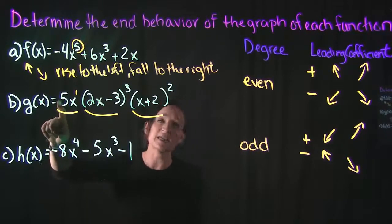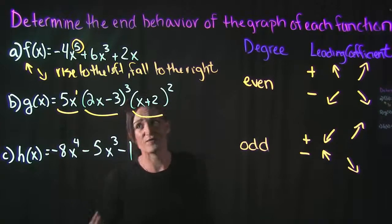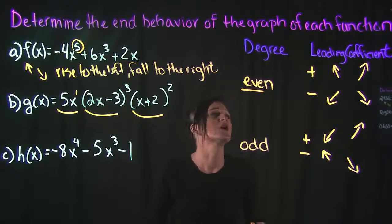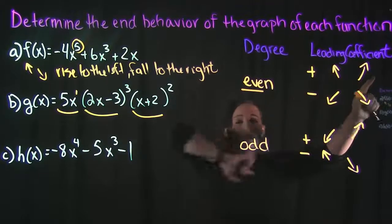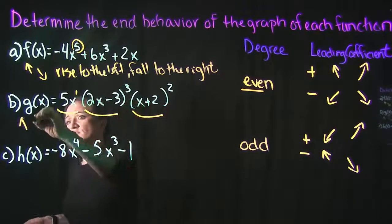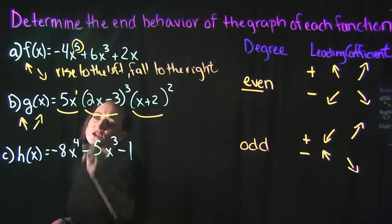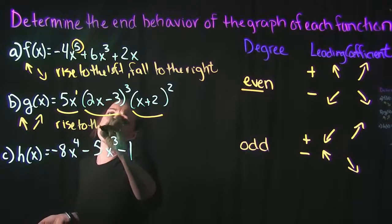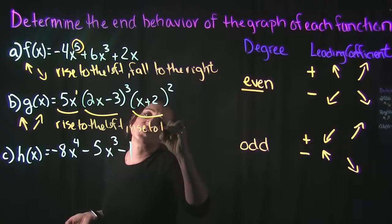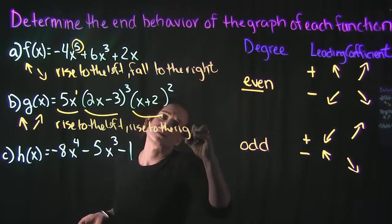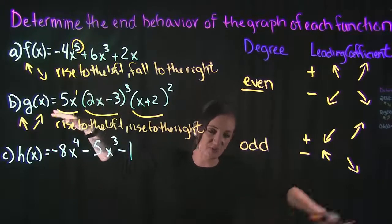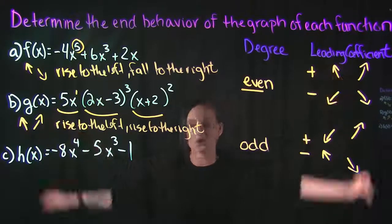Looking at the leading coefficient, it is positive. Since the degree is six, that means it's even and positive. So it's going to be rising to the left and rising to the right. We can say: rise to the left, rise to the right. Or, as x goes to negative infinity, it's going to be increasing; as x goes to positive infinity, it's going to be increasing.